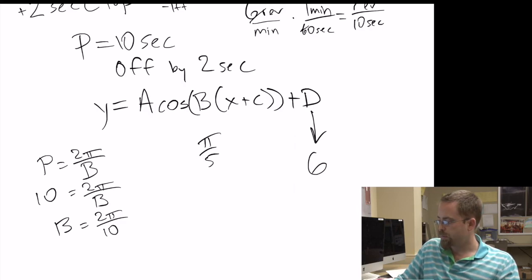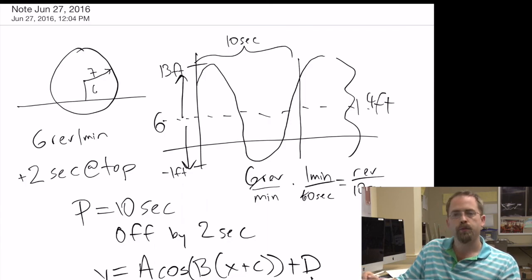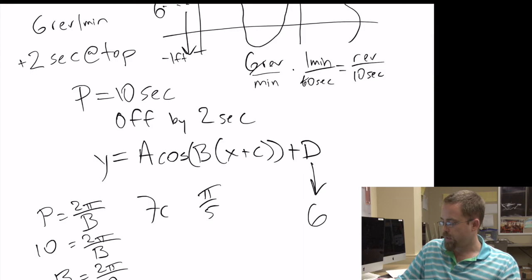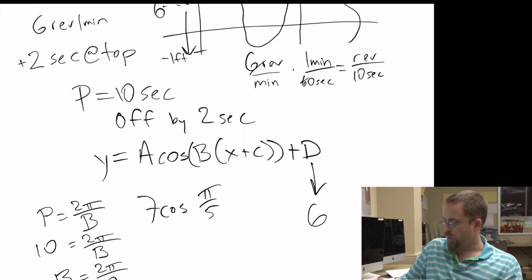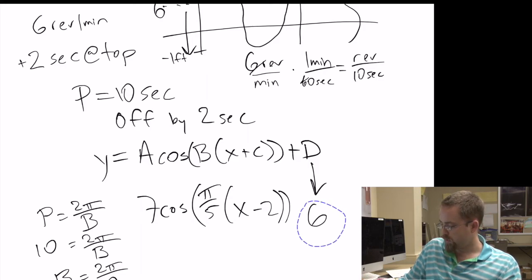The amplitude — what was the amplitude here? If this midline is at 6, then we're going seven up and seven down from there. So that's got to be a 7. And then we said we had a left shift of two. So putting that all together, the equation should be formatted like Forrester with the 6 at the front.